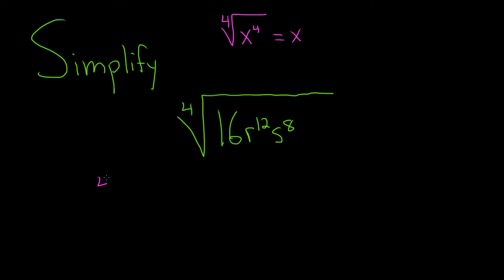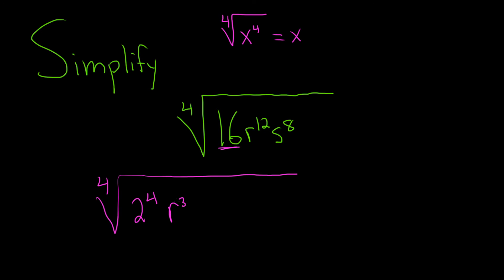So this is the fourth root of — we'll do one at a time. First we have to do 16. So 16 is 2 to the fourth. What about r? We know that 4 times 3 is 12, so we put the 3 here and the 4 on the outside, because we want it to the fourth power. And you can check: 4 times 3 is actually 12, so this is the same thing as r to the 12th.